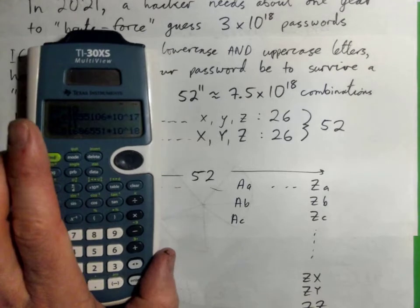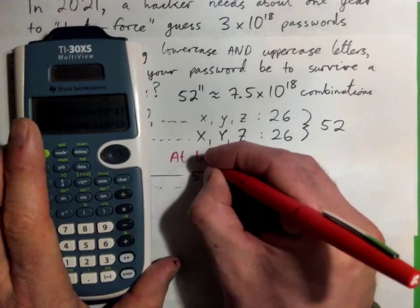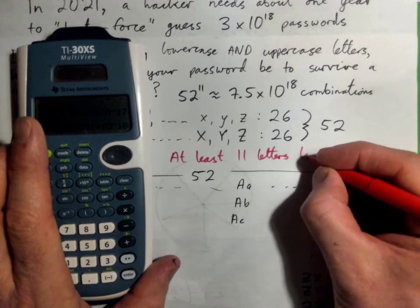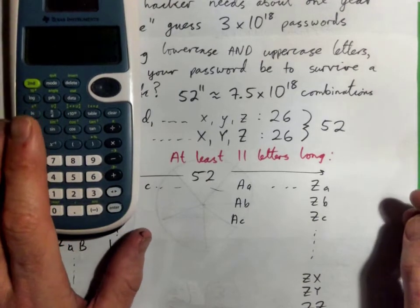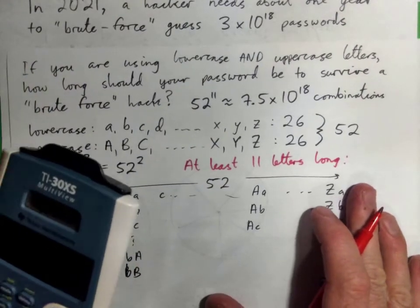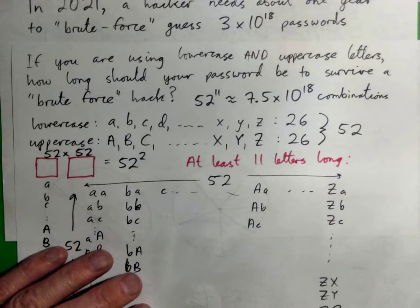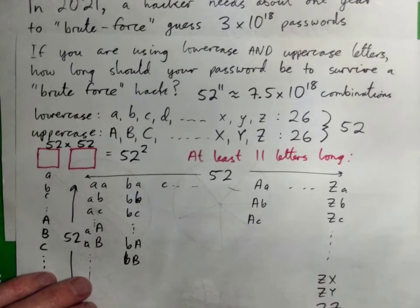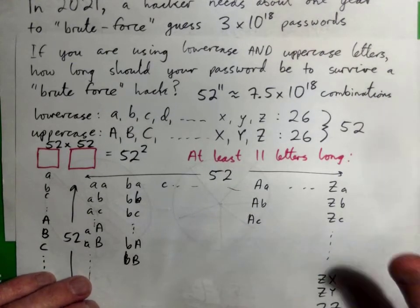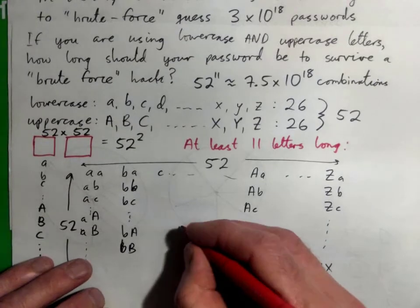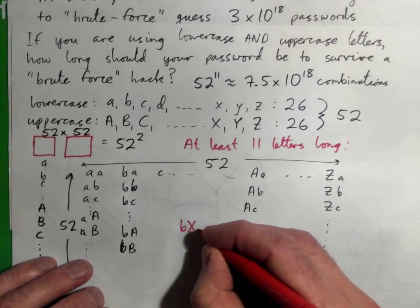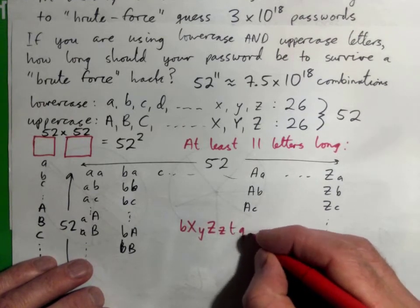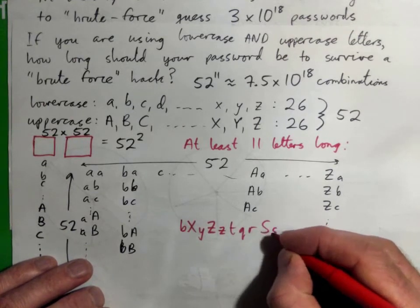So we need our password to be at least 11 letters long if we're using upper and lower case. And again, thinking about letters. I don't know, common words may not be great to use. You might want to come up with letters that are hard to remember. I'm just going to, just for the math part of this, I'm just going to kind of make something up like B, X, Y, Z, small z, T, Q, R, S, U, V.